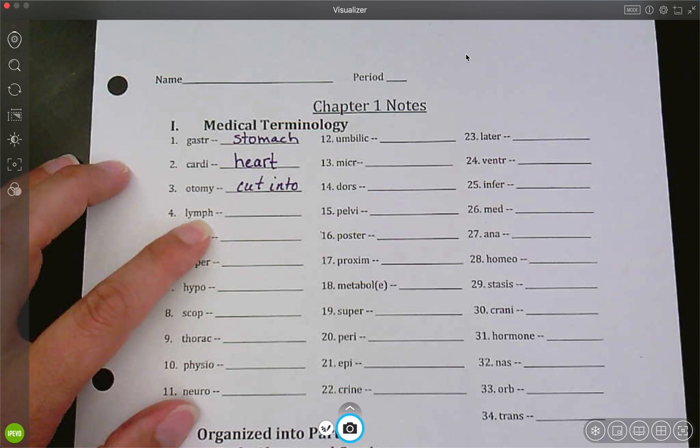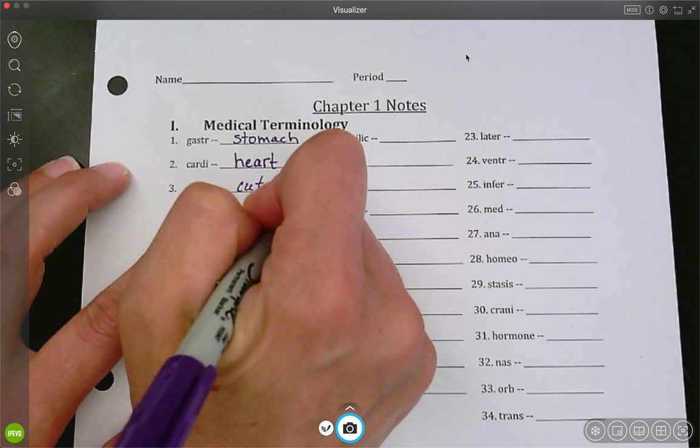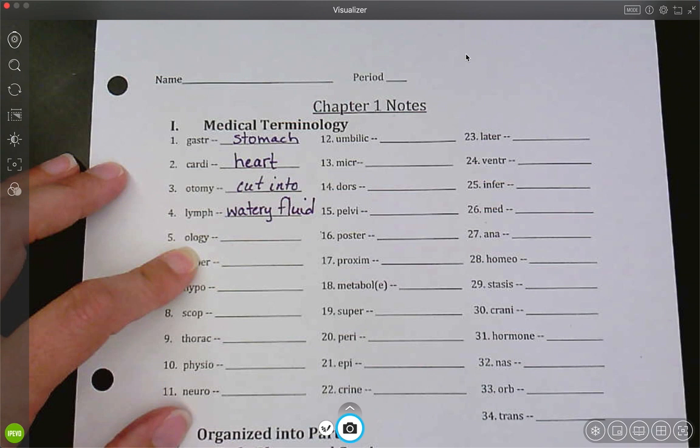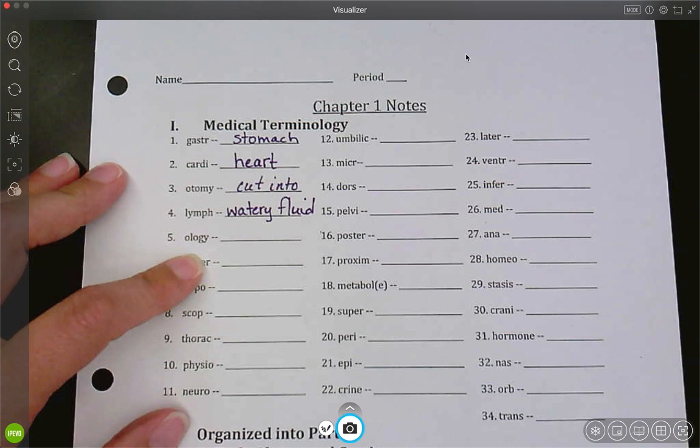Lymph is watery fluid. So the lymph is going to pick up some fluid that is not where it's supposed to be and put it into the blood. So we have lymph nodes all over our body. You can have doctors check them around your jaw. They check them in your neck. They check them in your armpits. So those are places where you would commonly think of them being, but they can be found in a lot of other places.